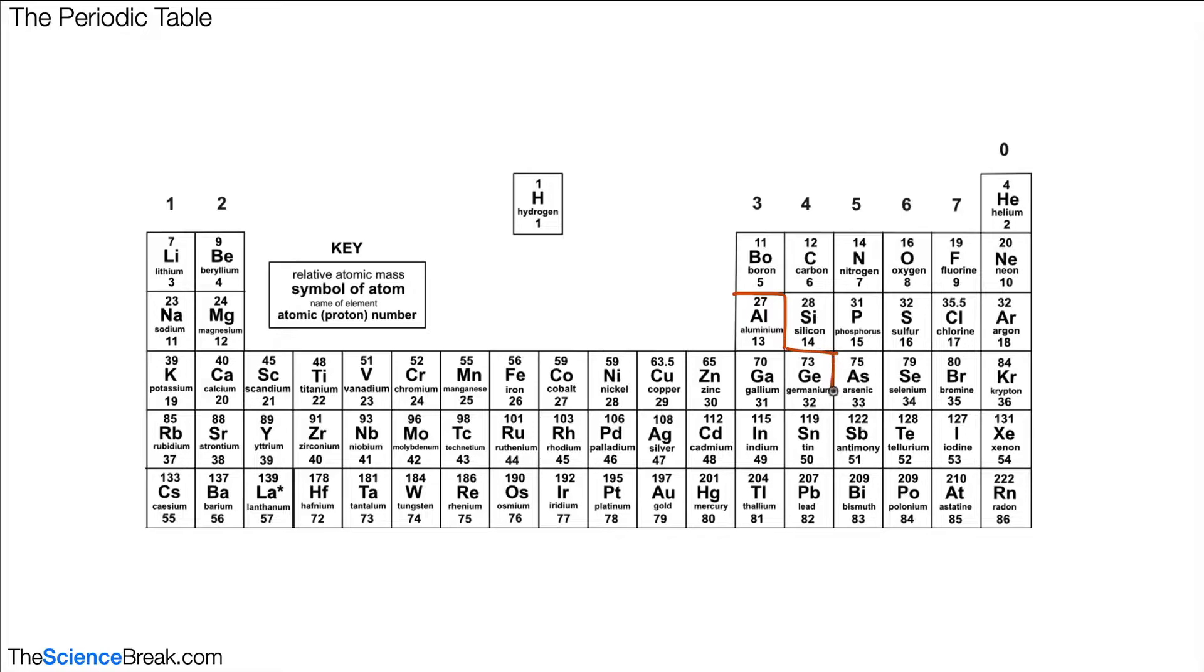The first thing is we can draw a stairway as shown on the screen. It starts with boron and aluminum. Everything on the right of that stairway is a non-metal, and everything on the left is a metal. So that's one way the periodic table is arranged, metals and non-metals.